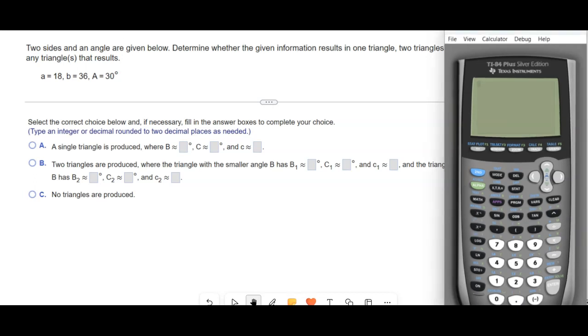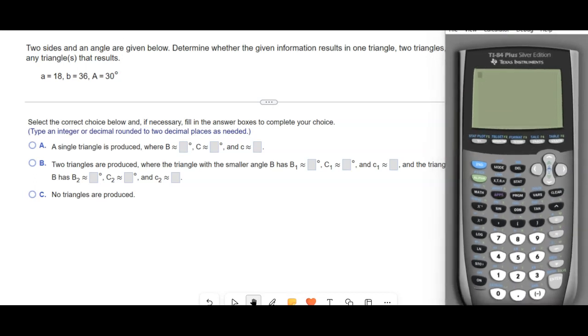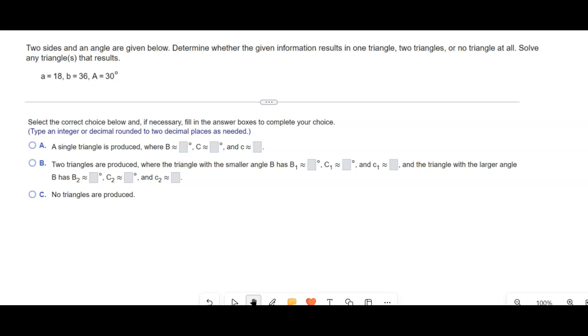Patriot Class, let's look at this next example, the ambiguous case of the law of sines. So again we have an angle, that's angle A,